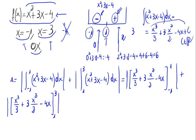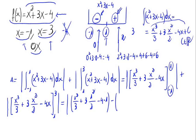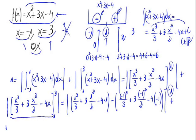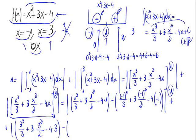We just have to substitute the values. For the first integral: substitute x = 1 giving (1³/3 + 3·1²/2 - 4·1), minus the result at x = -1 giving ((-1)³/3 + 3·(-1)²/2 - 4·(-1)). For the second integral: substitute x = 3 giving (3³/3 + 3·3²/2 - 4·3), minus the result at x = 1 giving (1³/3 + 3·1²/2 - 4·1).